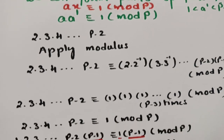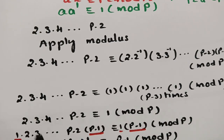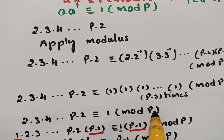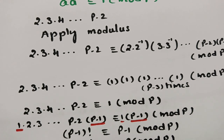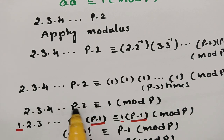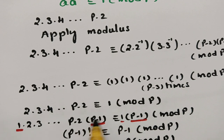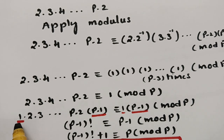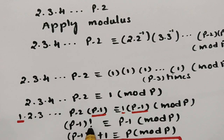So 2·3·4·…·(p−2) ≡ 1 (mod p). Now I multiply both sides by 1 and by p−1. The left side becomes 1·2·3·…·(p−2)·(p−1) = (p−1)!, and the right side becomes 1·(p−1) = p−1 (mod p).